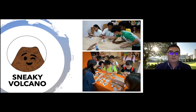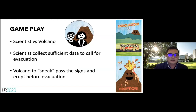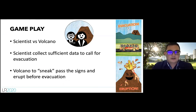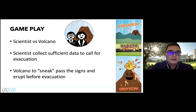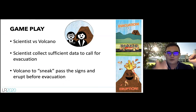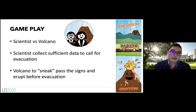The first game is called 'Sneaky Volcano' — a two-player card game pitting a scientist versus a volcano. The volcano has nine signs it may exhibit before an eruption and must play all nine cards to 'erupt' and win. The scientist has equipment cards and tries to detect at least three of the nine signs the volcano exhibits.